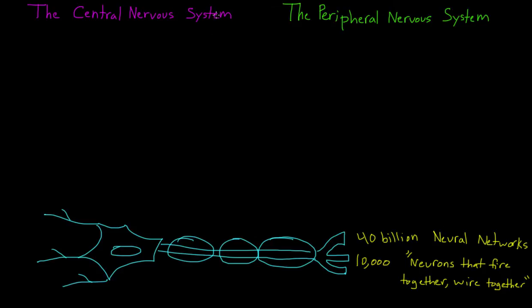Our nervous system, or the system of neurons in our body, can be divided into two main systems. The first is called the central nervous system, and the second is called the peripheral nervous system. The central nervous system includes just two things: the brain and the spinal cord.